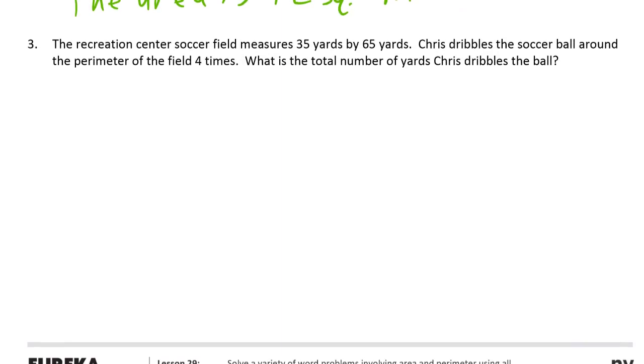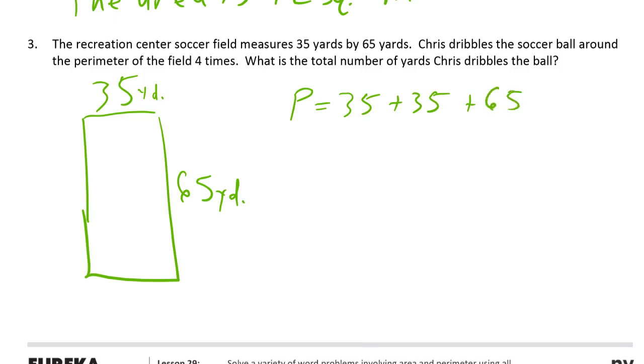The recreation center soccer field measures 35 yards by 65 yards. Chris dribbles the soccer ball around the perimeter of the field four times. What's the total number of yards Chris dribbles the ball? So, read it. So he's going around the soccer field four times. We know the length and the width of the field. I'm just summarizing it. So some self-talk can really help here if you're not sure what it is you're supposed to do. So your picture is going to be a picture of the soccer field. This is a rectangle. And this is 35 by 65. And these are yards. So we've got the perimeter is 35 plus 35 plus 65 plus 65.